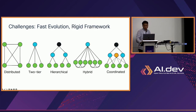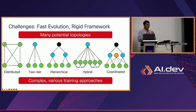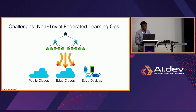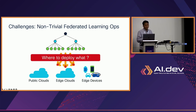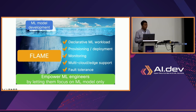What are the challenges? We have many potential topologies involving complex and various training approaches, but frameworks are not flexible or easily extensible to support these various topologies. Another problem is that, unlike centralized learning, federated learning involves questions of how to deploy, where to deploy, and what components to deploy. We want to solve these challenges by introducing FLAME. FLAME's ultimate goal is to empower ML engineers by letting them focus on what they do best, which is model development, while FLAME handles monitoring functionality, multi-cloud support, and so forth.